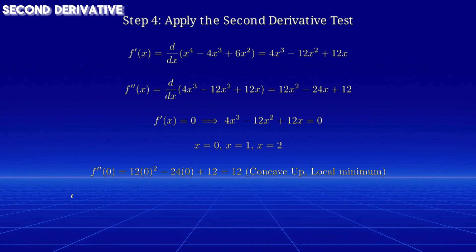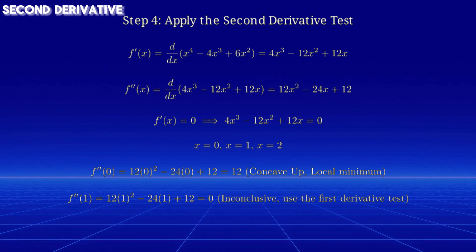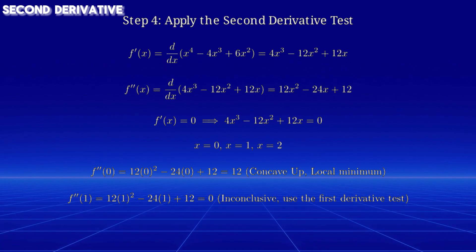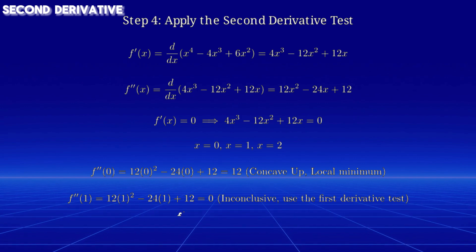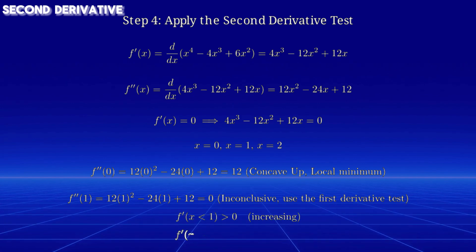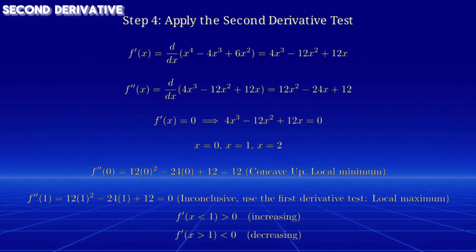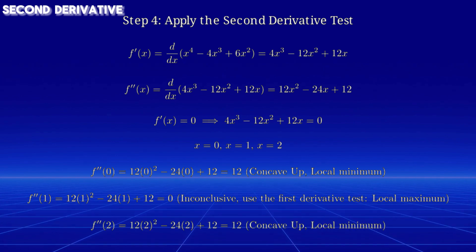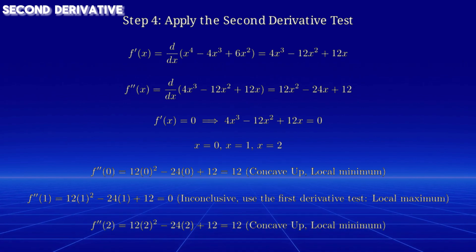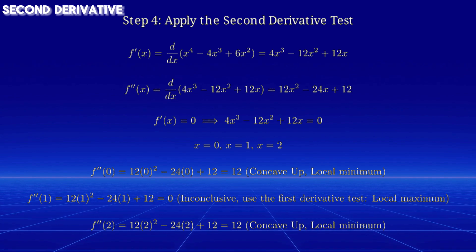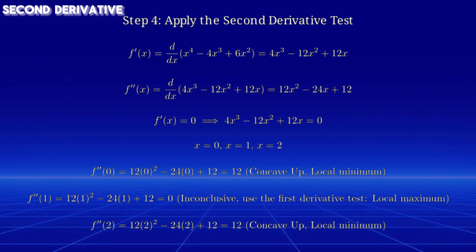At x equals one, the second derivative is equal to zero, which means the test is inconclusive. To determine the behavior, we use the first derivative test and look at the values of the first derivative before and after one. For x less than one, the first derivative is greater than zero, and for x greater than one, the first derivative is less than zero. Thus, x equals one is a local maximum. At x equals two, the second derivative is also greater than zero, meaning the graph is concave up, indicating a local minimum. This example highlights how the second derivative test helps us classify critical points and understand the graph's behavior.